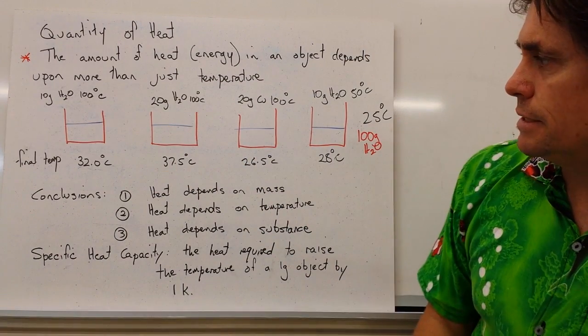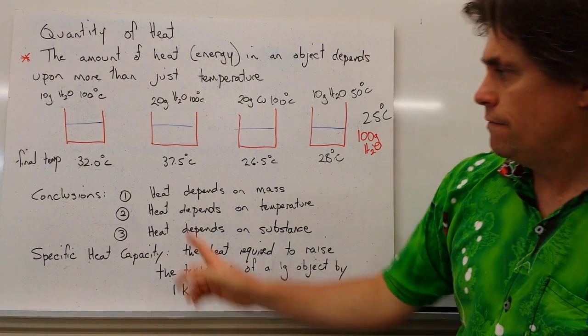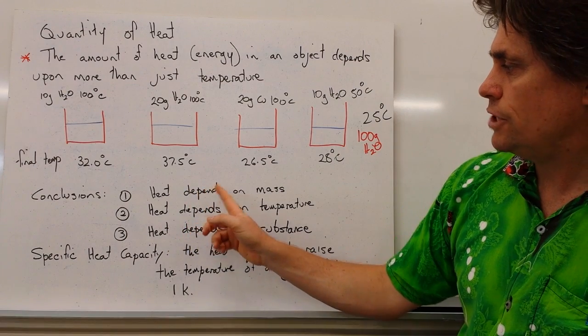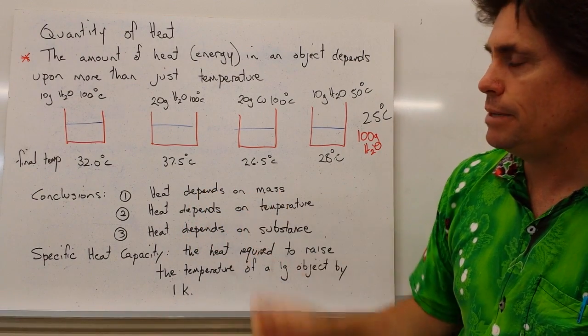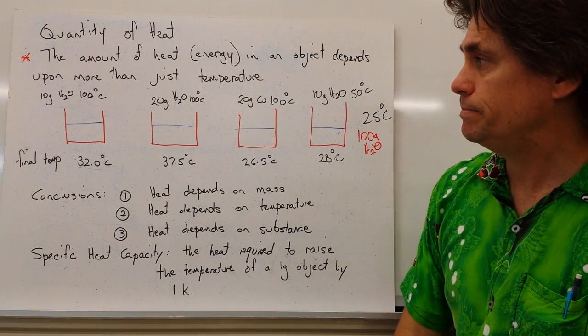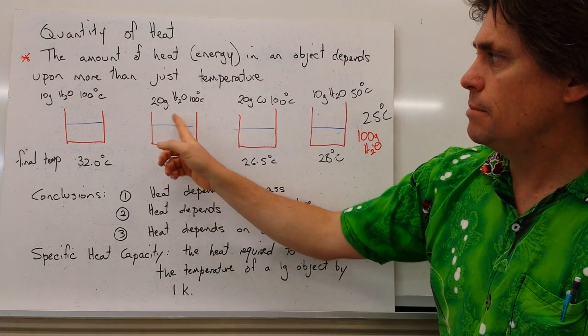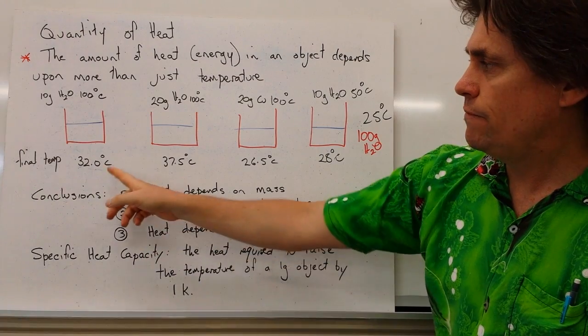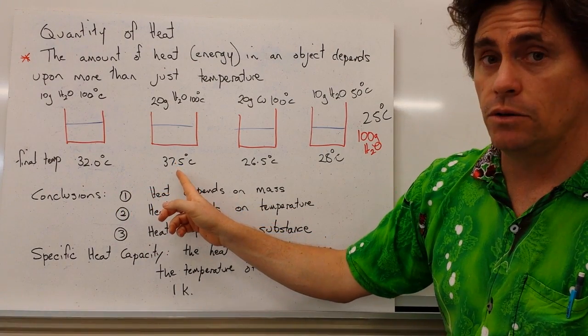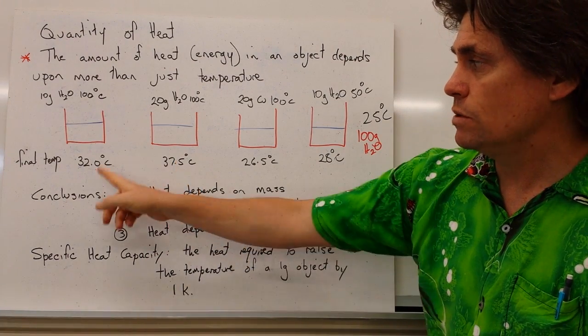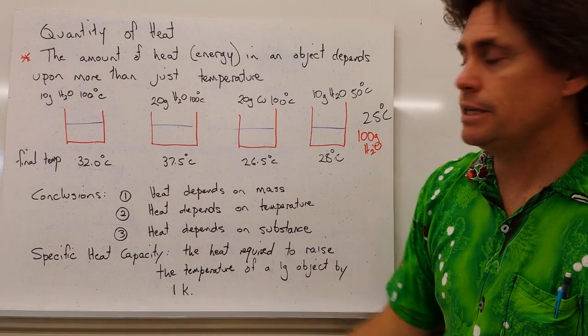So these particular experiments tell us three things. First of all, heat or change in heat depends on the mass being added or the mass in the system. So from the first to the second experiment, we doubled the mass of the water coming in, we found that the final water temperature was higher. Now it wasn't double, but it was certainly higher.